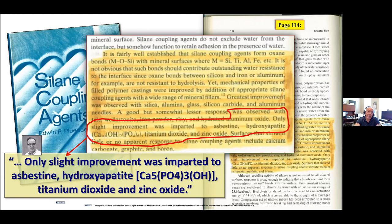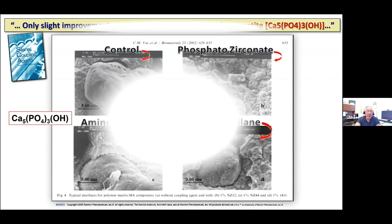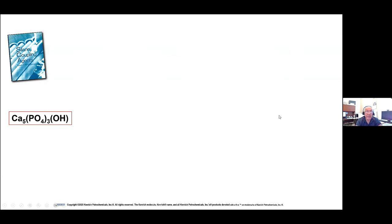Work done by VAS and others shows the control polymer without coupling agent, then the phosphatazirconate, and then amino zirconate and aminosilane — and you can see the zirconate is outperforming the silane at that interface. We also work on magnesium hydroxide, barium sulfate, and other materials that are not great with silanes.